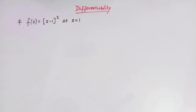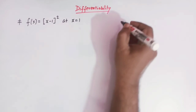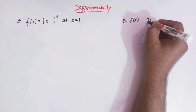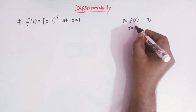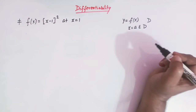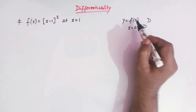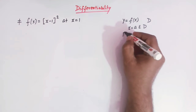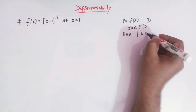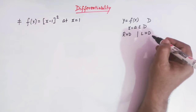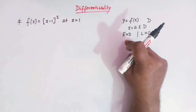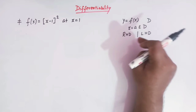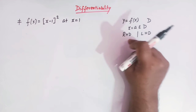Before solving this problem, let us first quickly take up the definition of differentiability of a function. Suppose we have a function y = f(x) defined in some domain D, and suppose x = a is a point in the domain. To test whether this function is differentiable at x = a, we find the right hand derivative and the left hand derivative — these are simply limits.